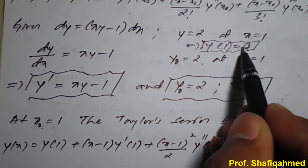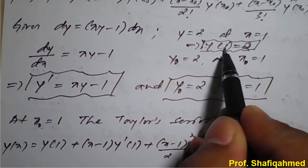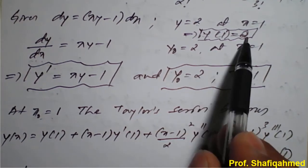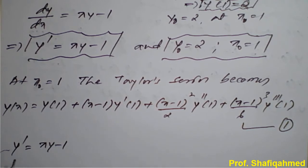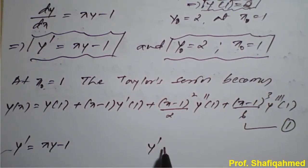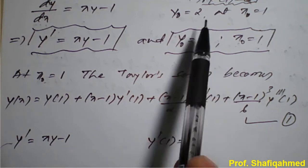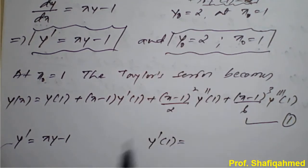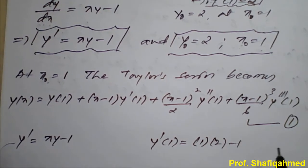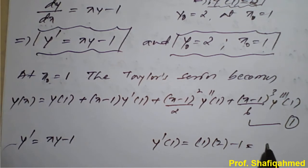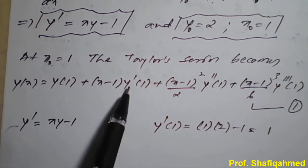Now, y = 2 at x = 1 means y(1) = 2. So the first term value is 2. Next we need y'(1). Since y' = xy - 1, replacing x = 1 and y = 2: y'(1) = 1×2 - 1 = 2 - 1 = 1. So y'(1) = 1.